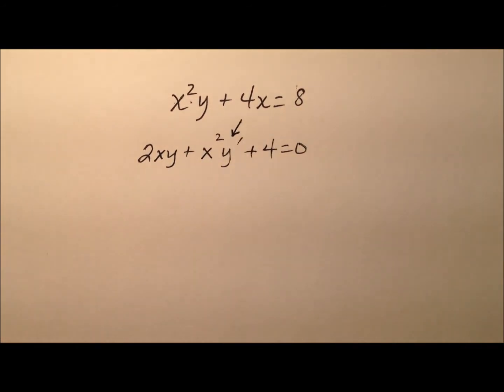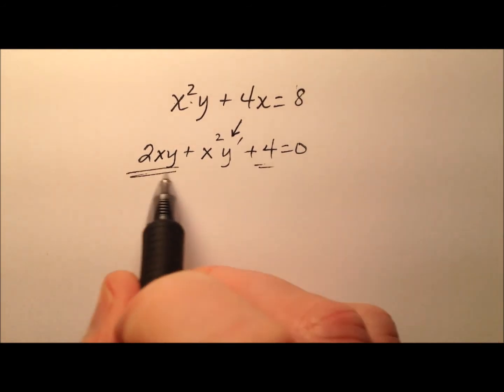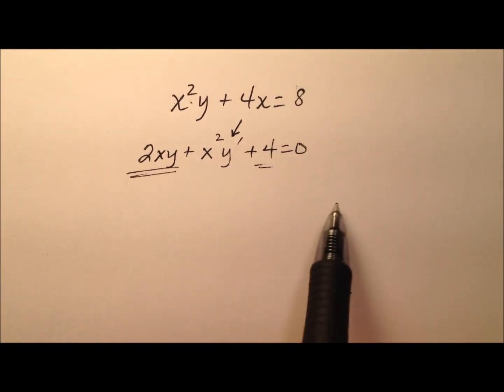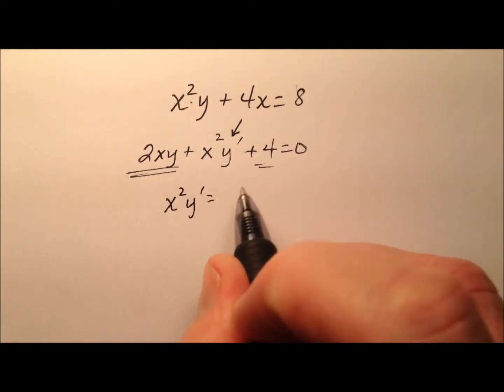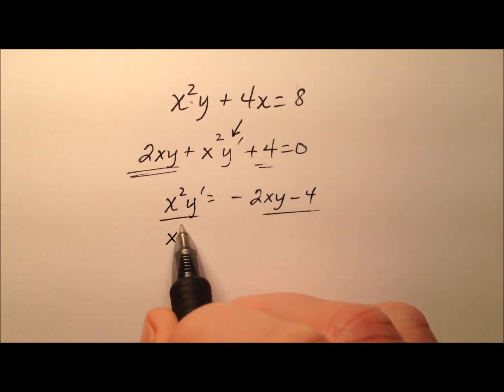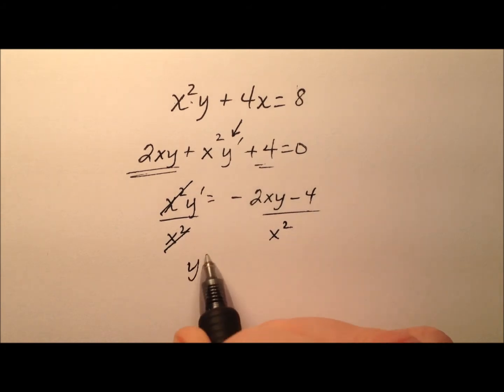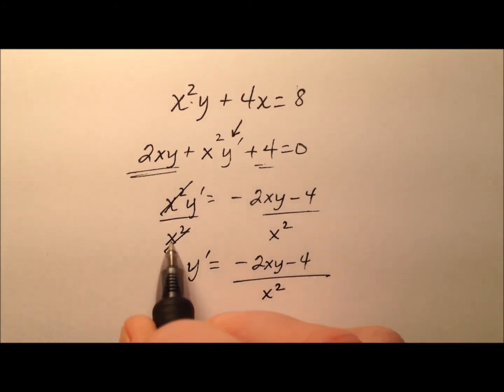Y prime only shows up once so let's isolate that term. We'll take these two terms and shuffle them over to the right side. So x squared y prime equals negative 2xy minus 4. When we divide both sides by that x squared we'll have y prime equals negative 2xy minus 4 all over x squared.